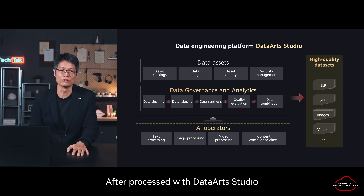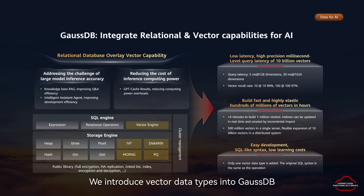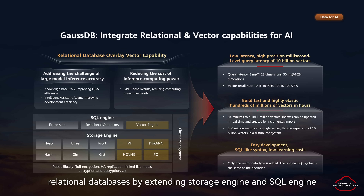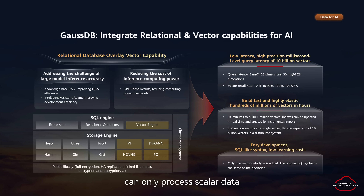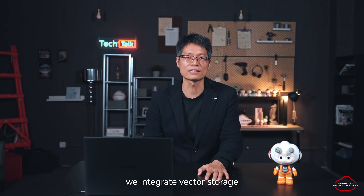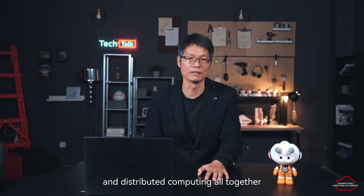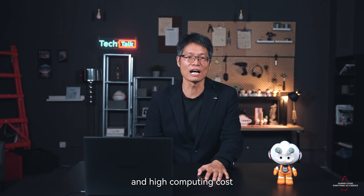After processing with Data Studio, this data can enter the data circulation and sharing stage, ready for further AI development. We introduce vector data types into GaussDB relational database by extending the storage engine and SQL engine. This design breaks the limitation that traditional databases can only process scalar data and require external tools to process vector data. To implement vector processing, we integrate vector storage, efficient indexing, an in-database AI engine, and distributed computing all together, solving the challenges of large model inference accuracy and high computing cost.